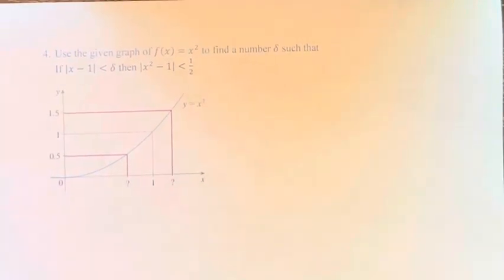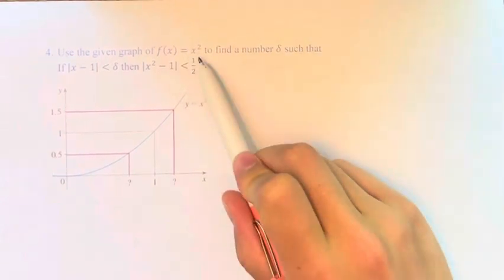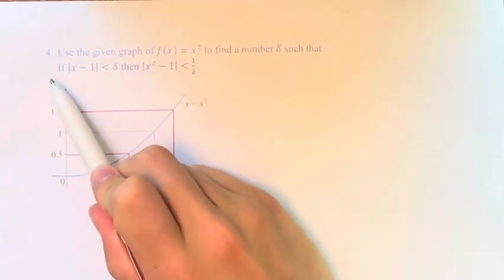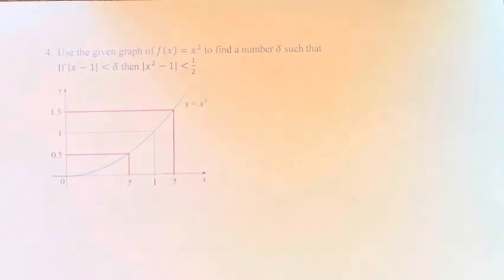Hello and welcome back to another video. In this problem, we're asked to use the given graph of f(x) equals x squared to find a number delta such that if the absolute value of x minus 1 is less than delta, then the absolute value of x squared minus 1 is less than 1 half.